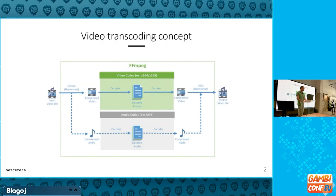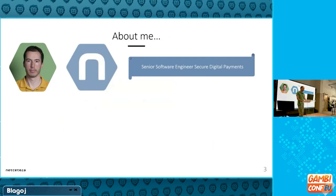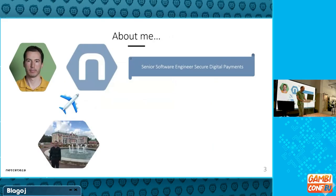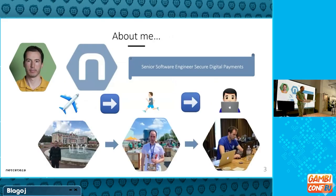Before we start, a couple of words about me. My name is Blagoj, I came from Macedonia, I work at a Swiss company, and I'm a tech lead of a team which develops applications related to a protocol which enables increased security during online payments. The easiest way to describe me is by three things I really like: traveling, running, and last but not least, coding.